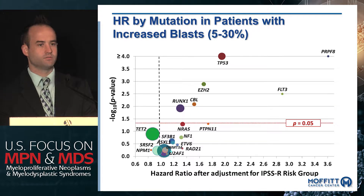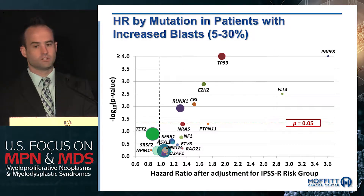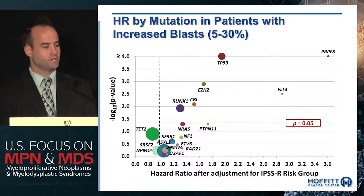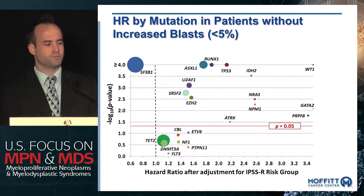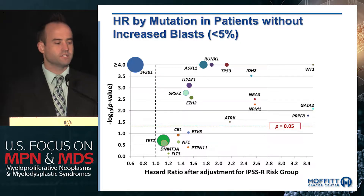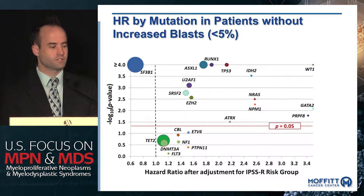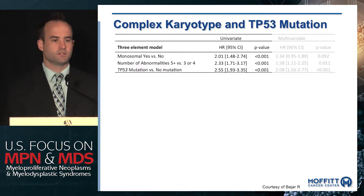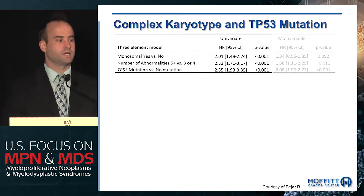Adding an additional level of complexity, hazard ratios for individual mutations vary based on the percentage of bone marrow blasts. In patients with increased blasts, p53 has a very high hazard ratio, while ASXL1 shows no prognostic relevance. In patients with lower blasts, SF3B1 has a lower hazard ratio as expected, but ASXL1, RUNX1, and several splicing factors become prognostically relevant.